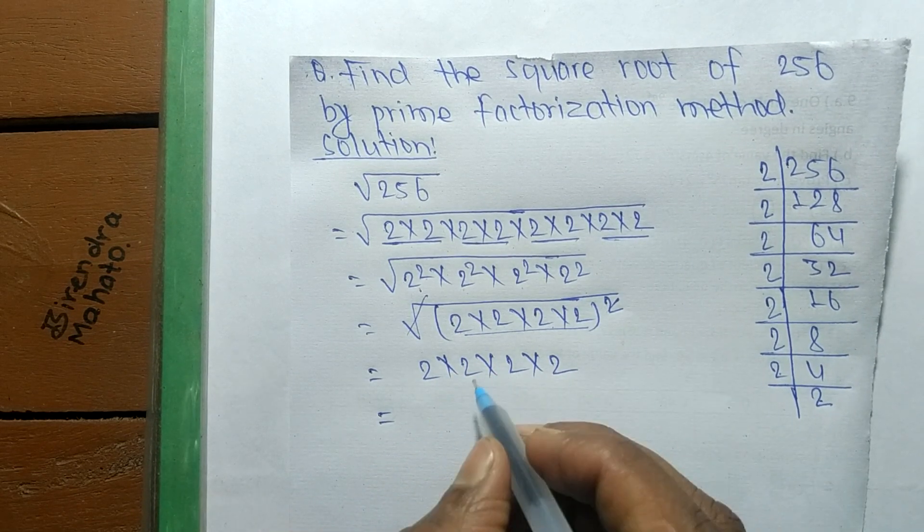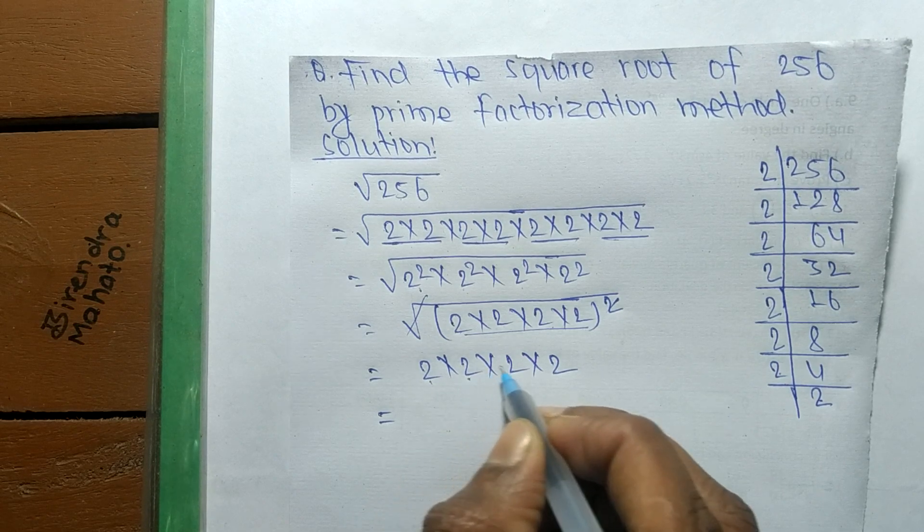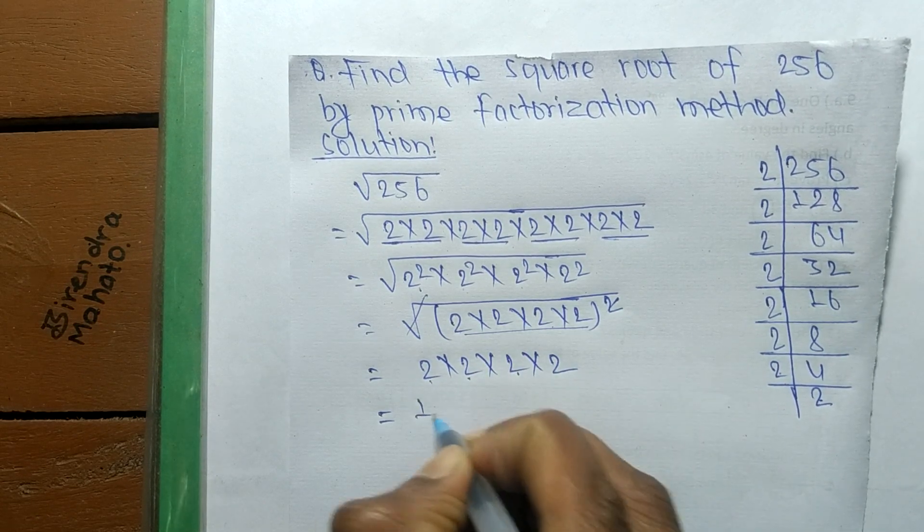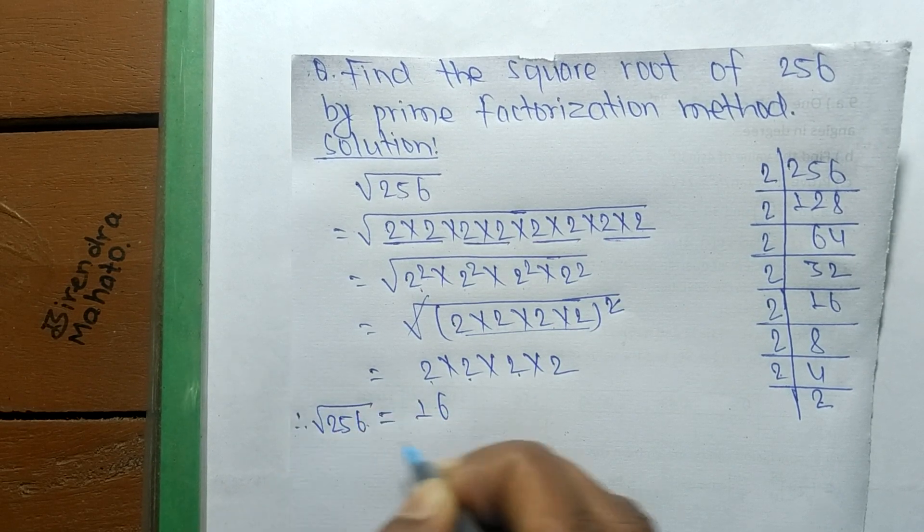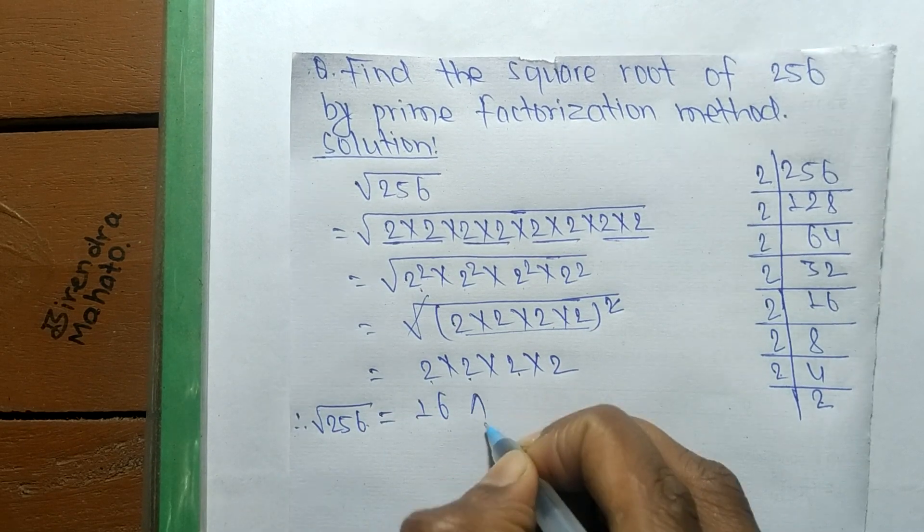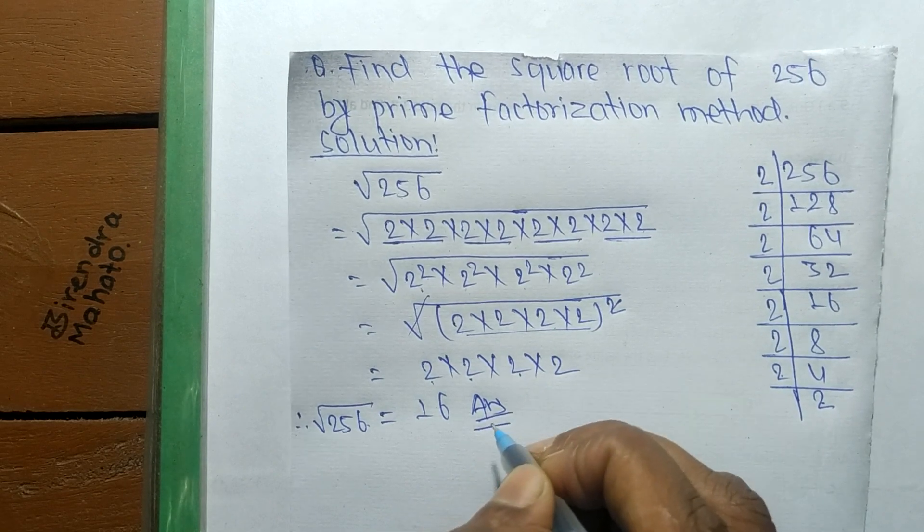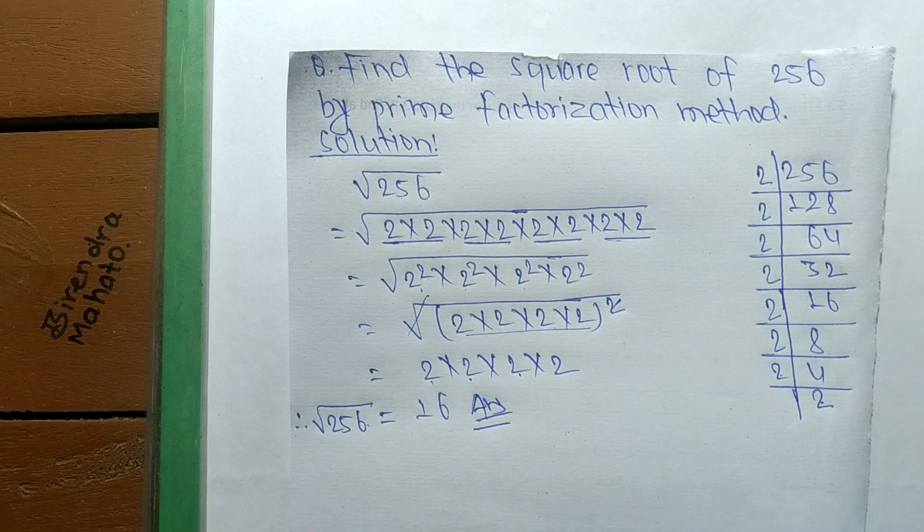So it is 2 times 2 is 4, times 2 is 8, times 2 is 16. So the square root of 256 is equal to 16. This much for today, and thanks for watching.